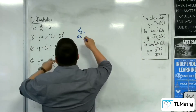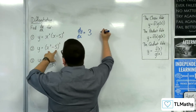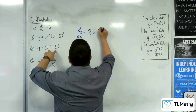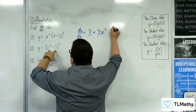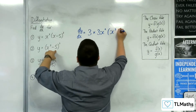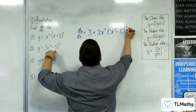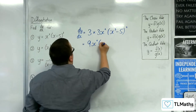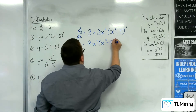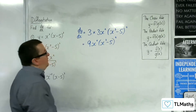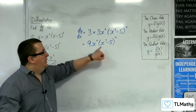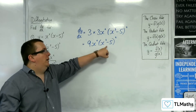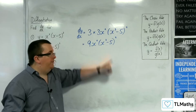The 3 comes down to the front, the derivative of what's inside comes outside — which would be 3x squared — and then we take 1 from the power. Tidying up, we get 9x squared times (x cubed minus 5) squared. If finding stationary points, we'd have two: one when x is 0, and one at the cube root of 5.